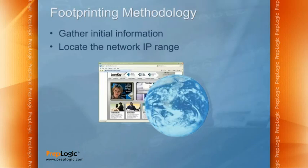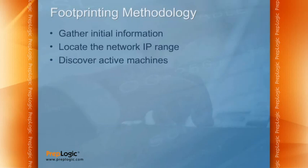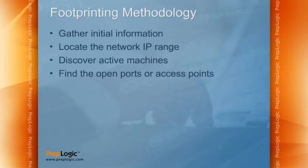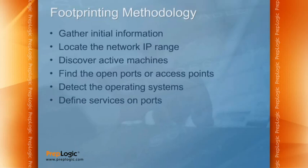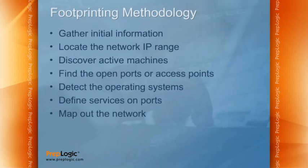A little-known secret is that you can often find information about organizations' networks by searching through publicly viewable support forums. Also, we want to discover any active machines on the network, which is part of scanning. Then we'll find open ports or access points, detect the actual operating systems being used — sometimes known as banner-grabbing — define the services on those ports, and finally map out the network and create a reference document we can use during our attack.